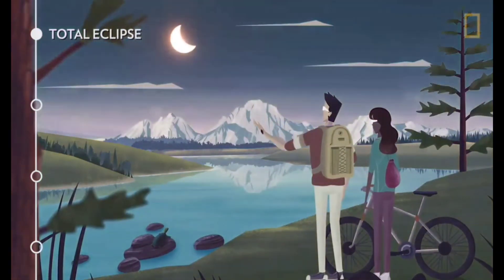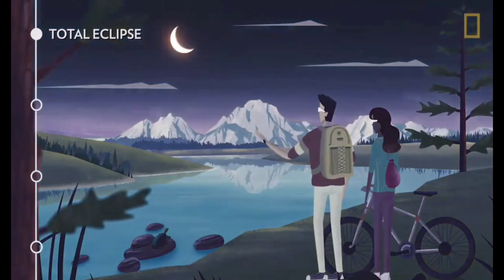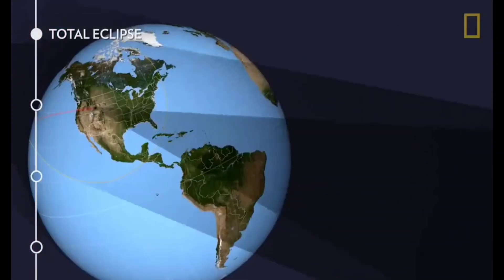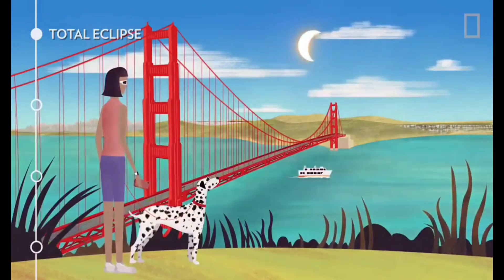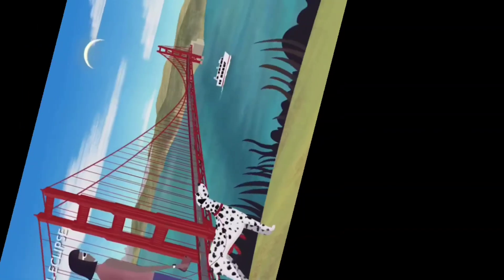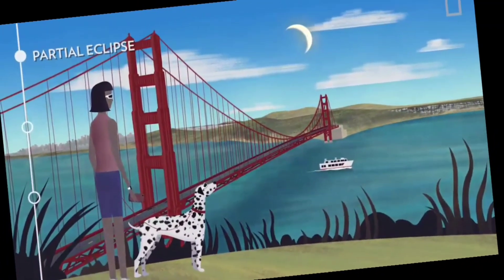At this time, the sky goes dark, temperature can fall, birds and animals often go quiet. Then there comes the end of the total solar eclipse. The next one is the annular solar eclipse.